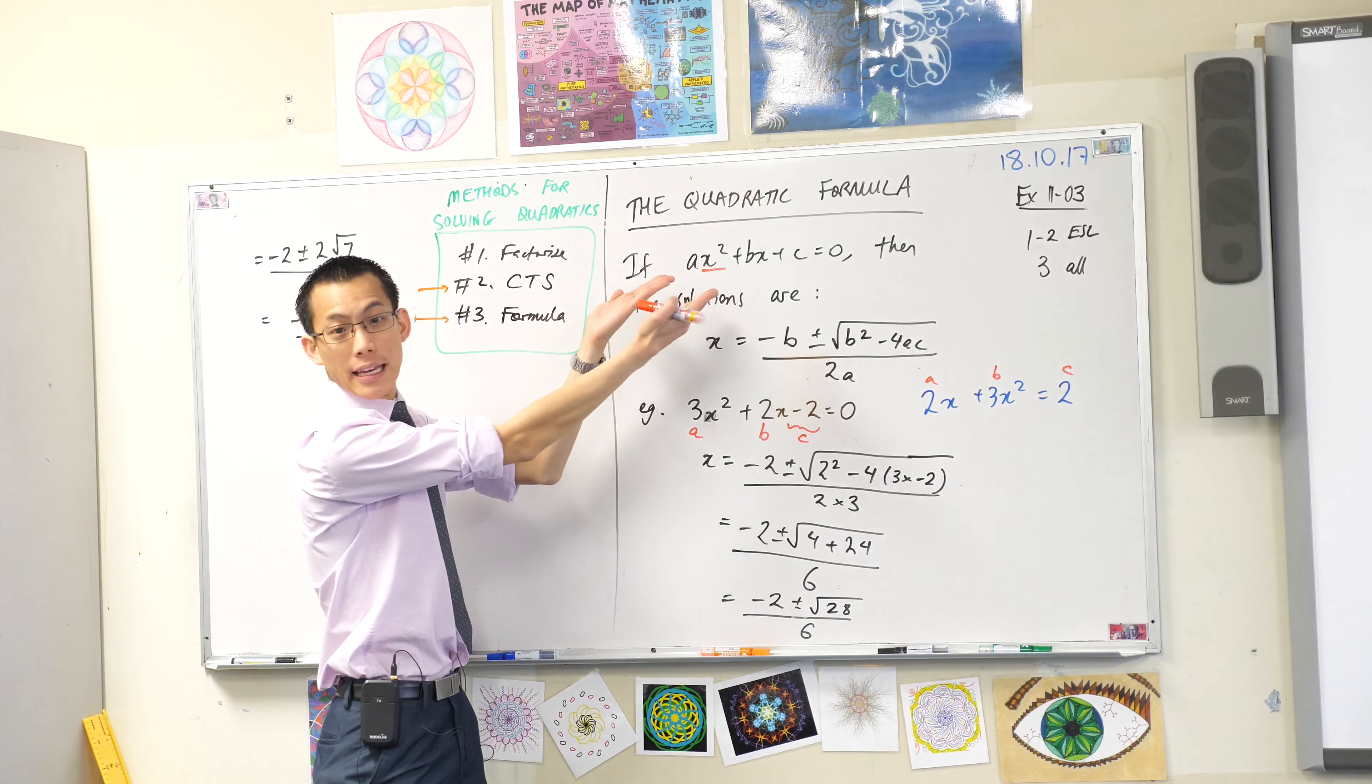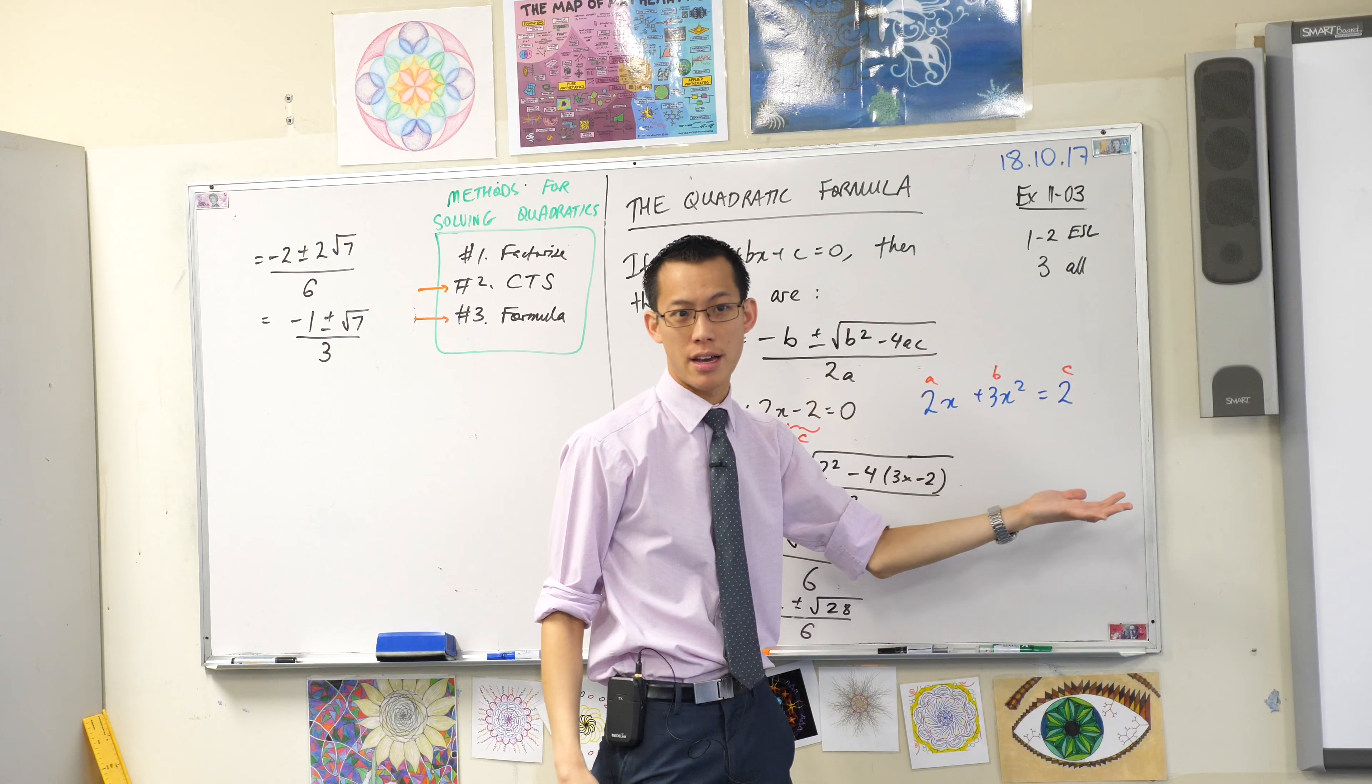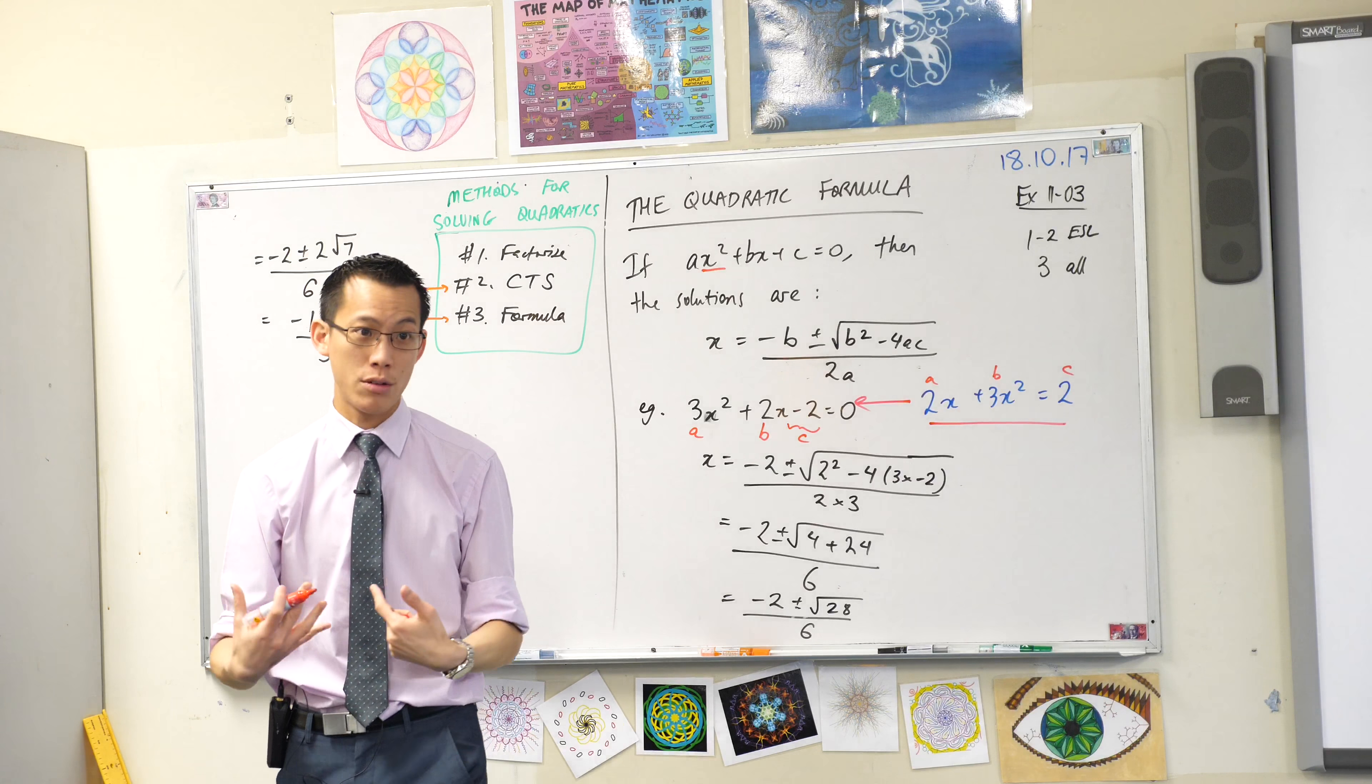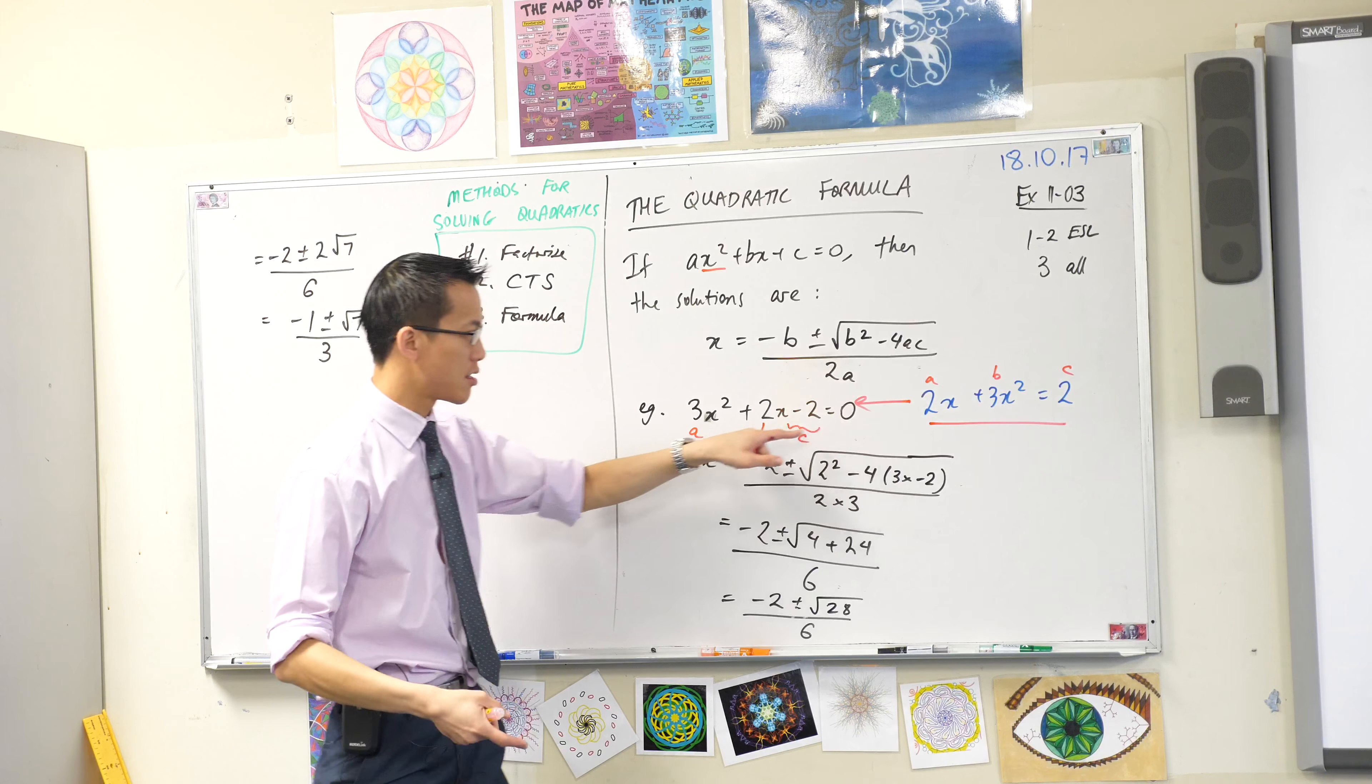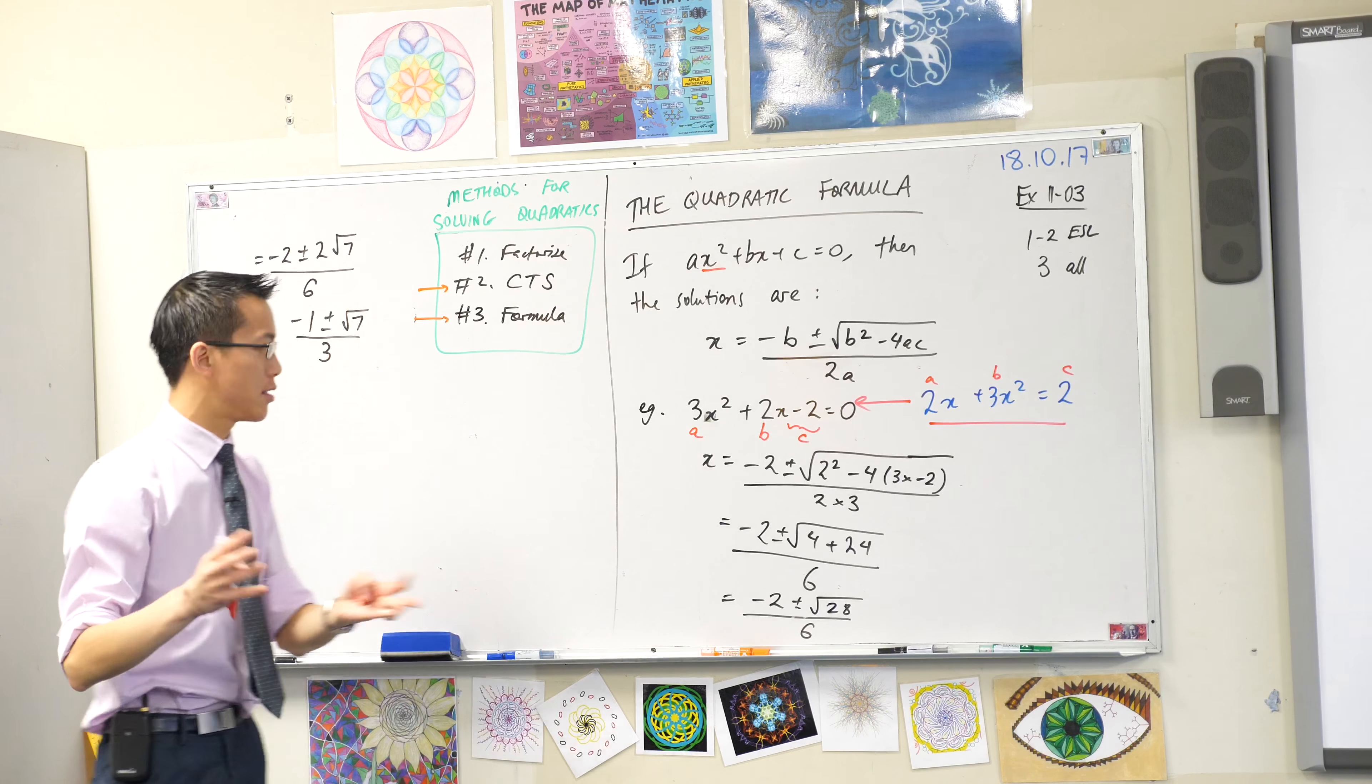You see this guy here, which we call general form, everything's on the left and there's a zero on the right hand side. Well I don't have a zero on the right hand side here. So what I'd have to do is I have to turn this into this. If I were given this question, my first job is rewrite it properly. Let's get everything in the right spot and in the right order, and then you can use the formula.